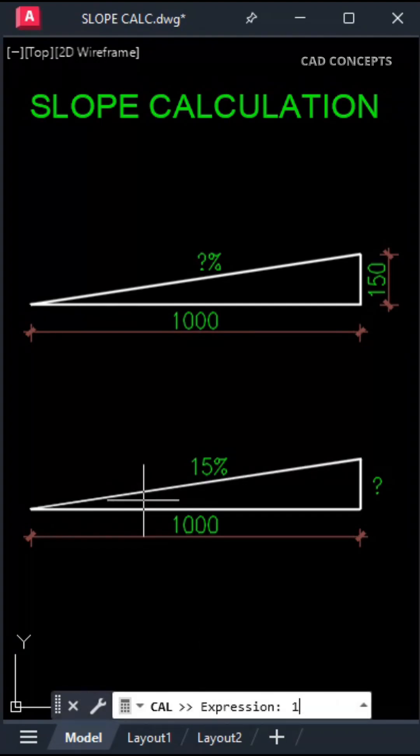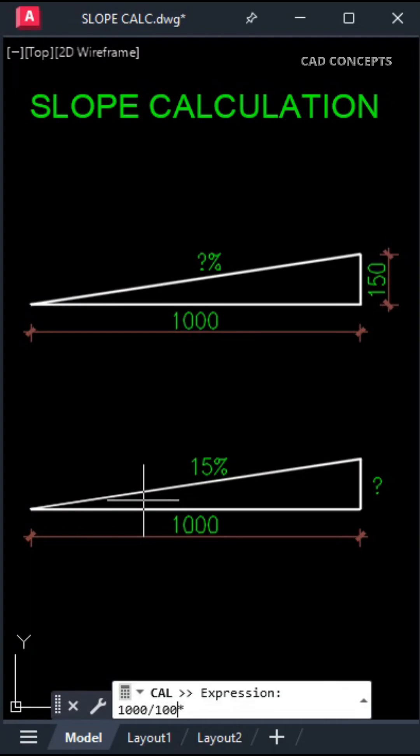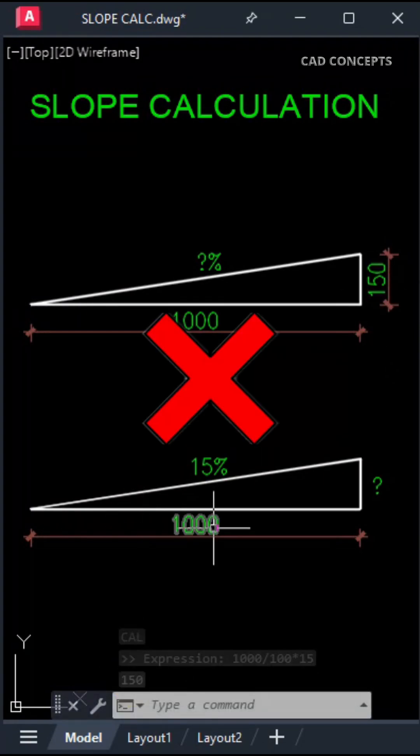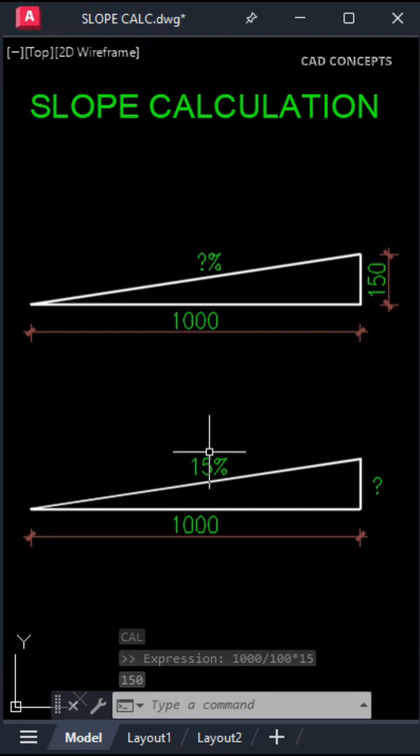This is not the perfect way to calculate slope percentage because you have to input entire detail manually and then you will get your result and again you have to input your text. We will automate the full process.